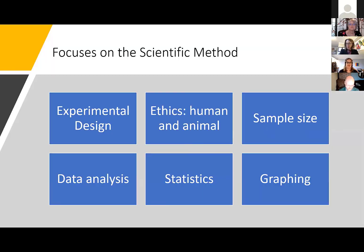The course itself is focused on the scientific method. We look at experimental design and thinking about how you construct experiments with controls. We look at ethics with both working with human research participants and animal tissues, and explain the oversight boards and why this is important and how we think about using these in an appropriate way. We explore the idea of sample size and understanding how variability is going to affect how big sample sizes need to be, as well as the costs and the ethical costs of the sizes that you're using with humans as well as animals.